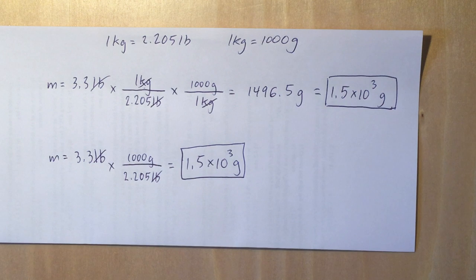The first one that you know is the 2.205 pounds is one kilogram, and the other one is one kilogram is a thousand grams.